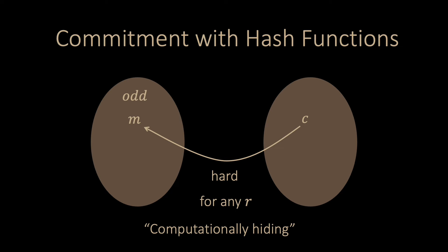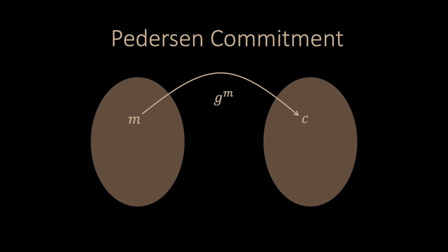What about the case where Sherlock and Watson are computationally unbounded? Can we come up with a commitment scheme? Now we present Pedersen commitments. They use the discrete logarithm.